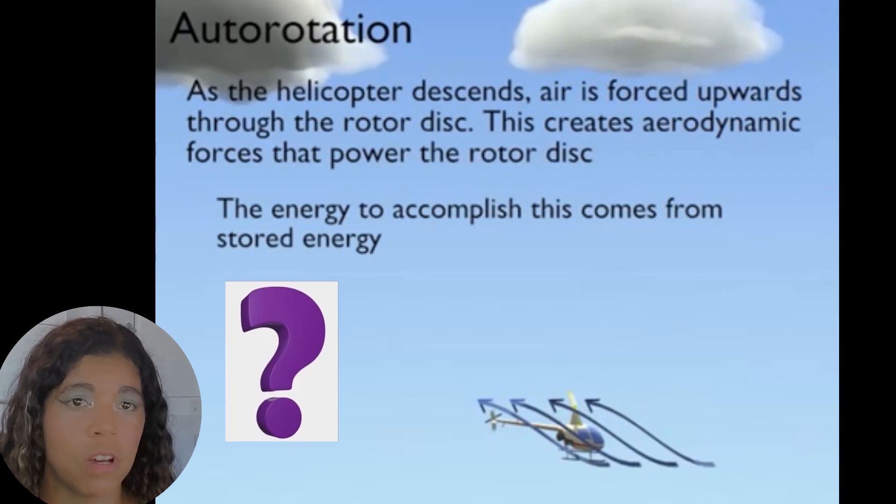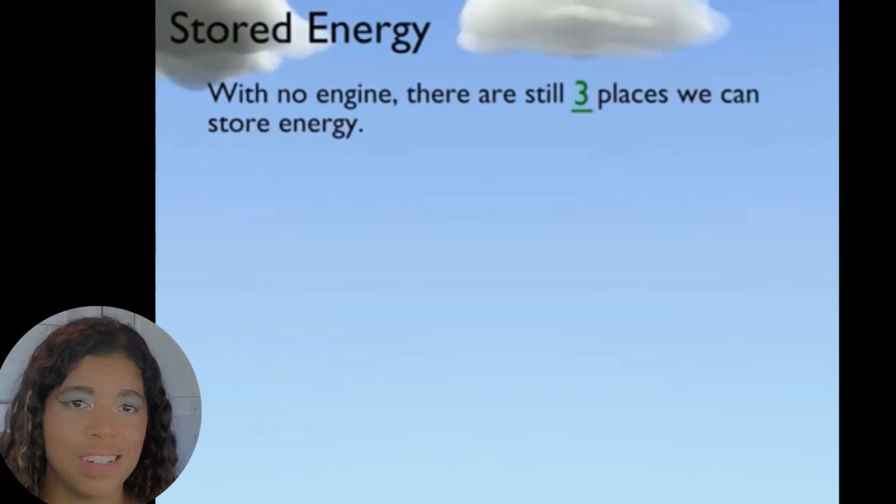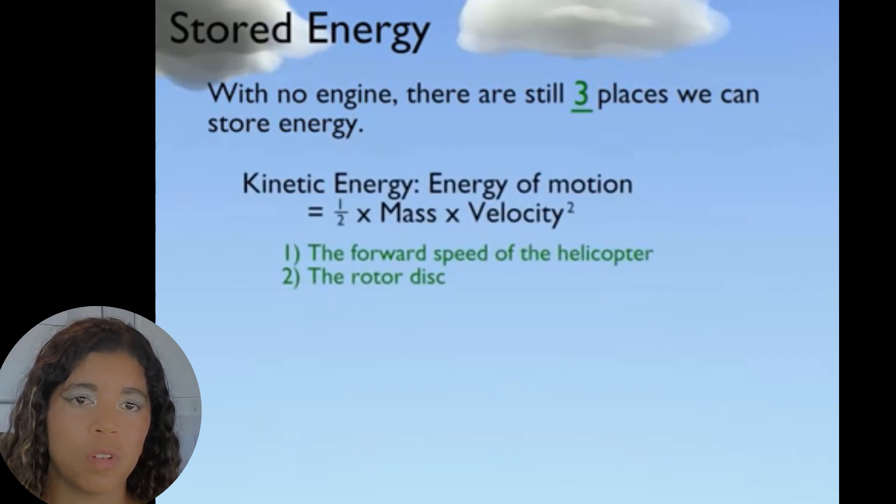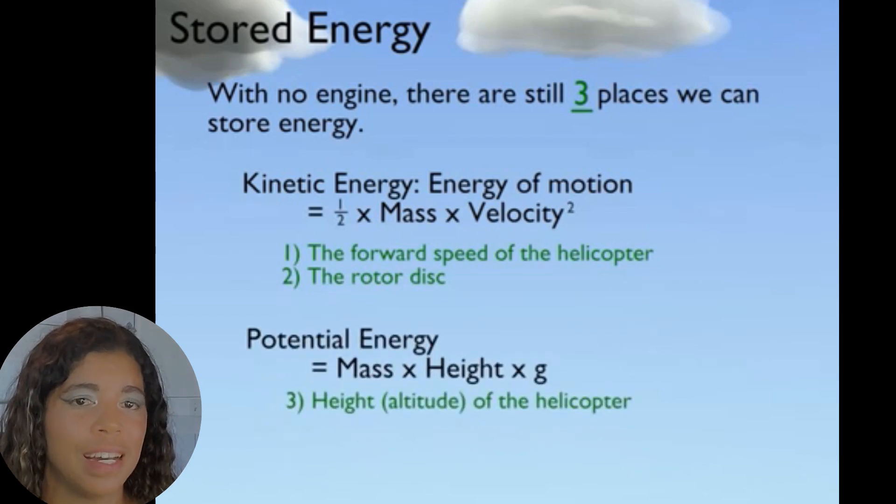So where is this stored energy? Well it turns out that there are three places we can store energy. There's kinetic energy which is ½ × Mass × Velocity². This can come from the forward speed of the helicopter as well as the rotating rotor disc itself. Additionally there is potential energy which is Mass × Height × g, simply energy based on your height. The higher you are the more energy there is. We'll take a look at each of these in some more detail.